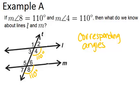So because these two angles are congruent, they're both 110 degrees, it means that these two lines, L and M, have to be parallel.